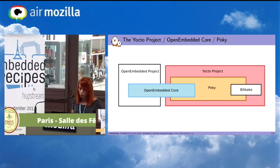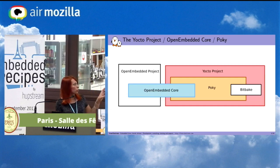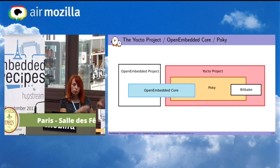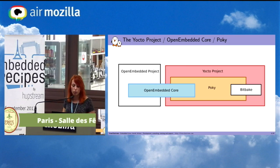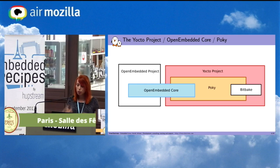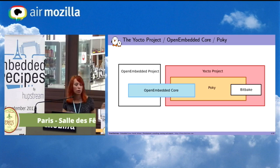This is how it's organized. You have the OpenEmbedded project and the Yocto project, and OpenEmbedded Core is co-maintained by these two organizations. Poky will provide you OpenEmbedded Core and BitBake.